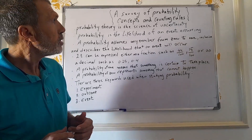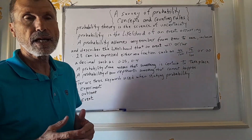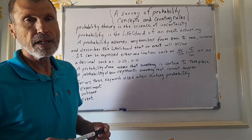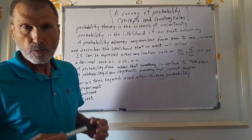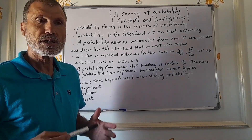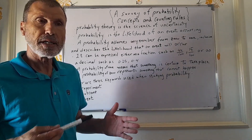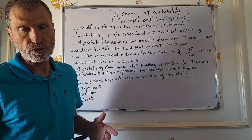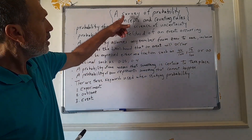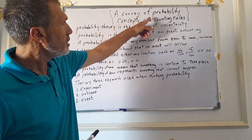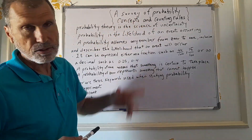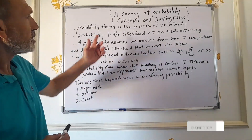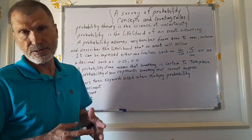Now we move to the second aspect of probability, namely inferential statistics, which is concerned with the computation that something will take place in the future. Our lesson today is a survey of probability concepts and counting rules. Probability theory is the science of uncertainty.